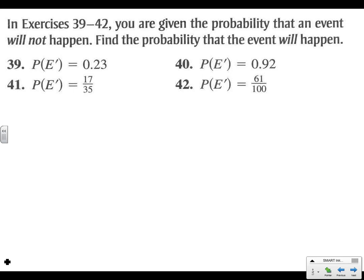Problem 42: You are given the probability the event will not happen. Find the probability the event will happen. So on this one, we're going the other way. 1 minus 61 over 100, which is 39 out of 100 for our final answer on 42.